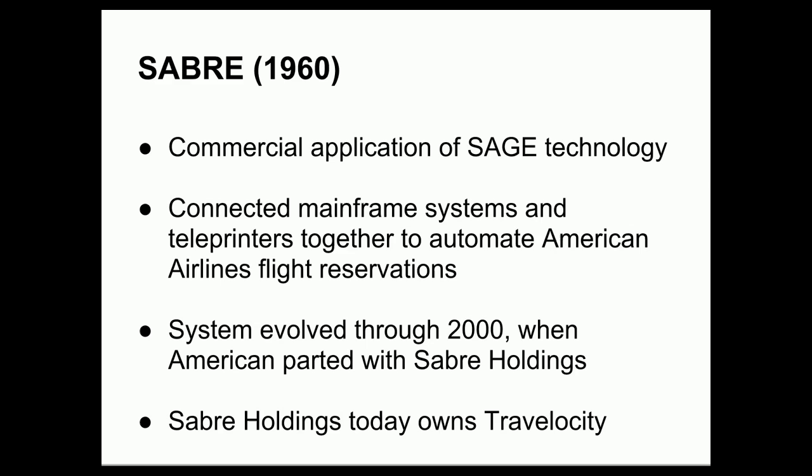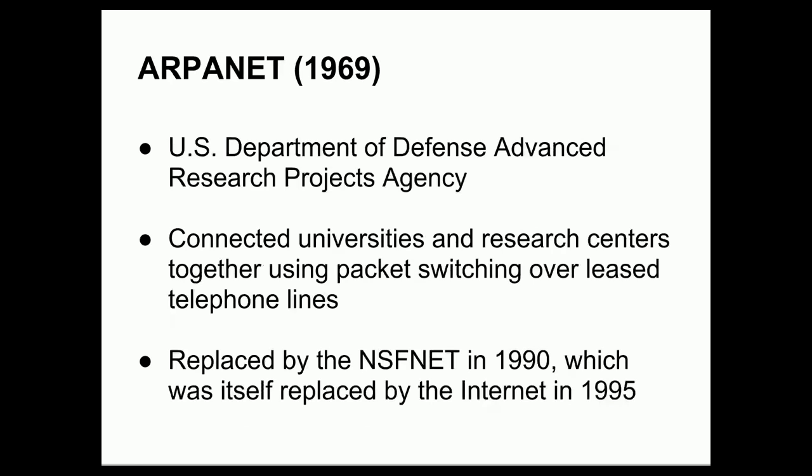It was recognized fairly early on that there would be commercial applications for this type of system. That came in the form of SABRE — a system for connecting mainframes and teleprinters together to automate flight reservations for American Airlines. This system was highly successful and continued to evolve until American Airlines parted ways with Sabre Holdings in 2000. Sabre Holdings still exists and owns Travelocity, so the roaming gnome you see in Travelocity commercials in the U.S. is an evolution of this SAGE technology, commercialized as SABRE.